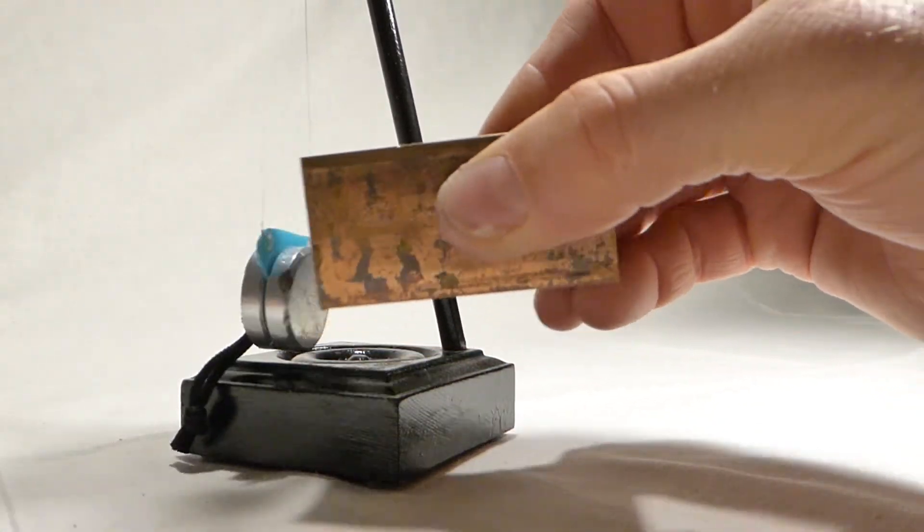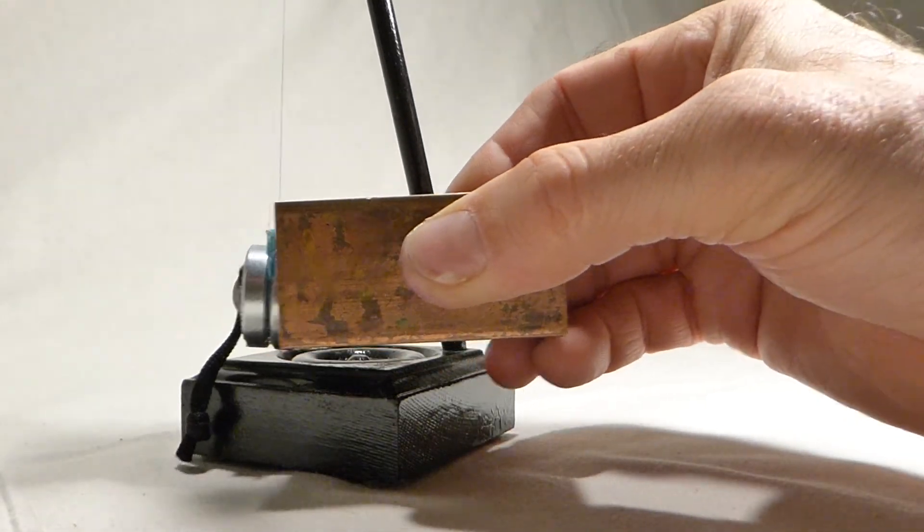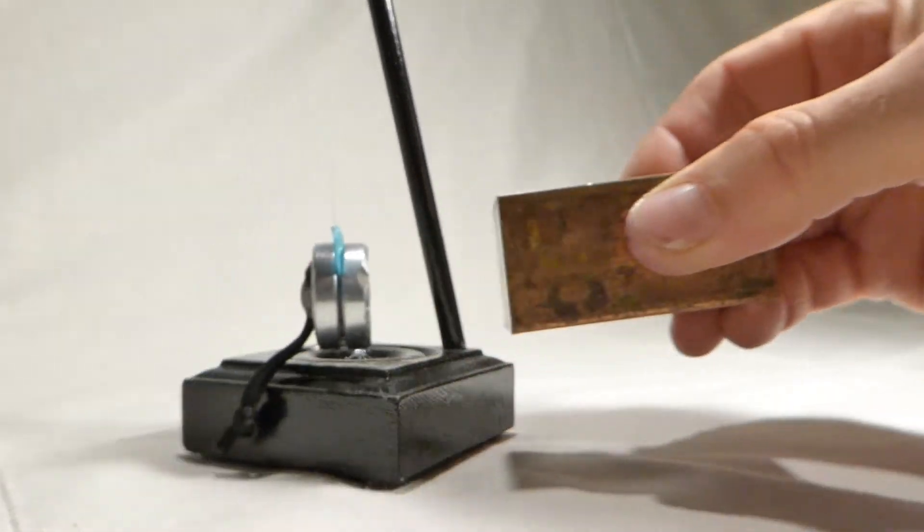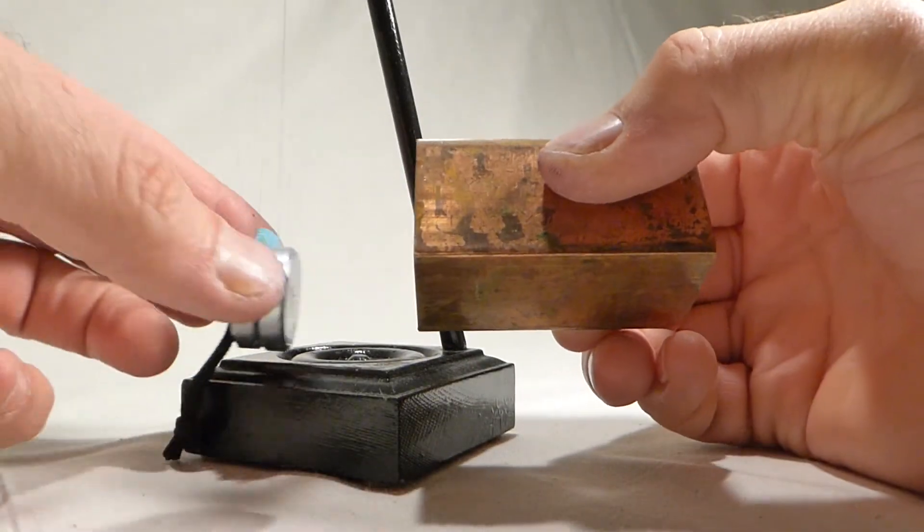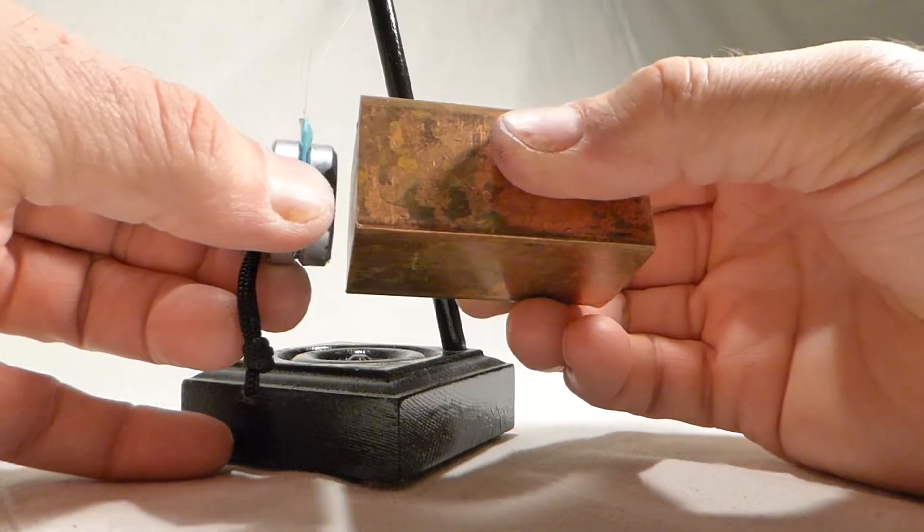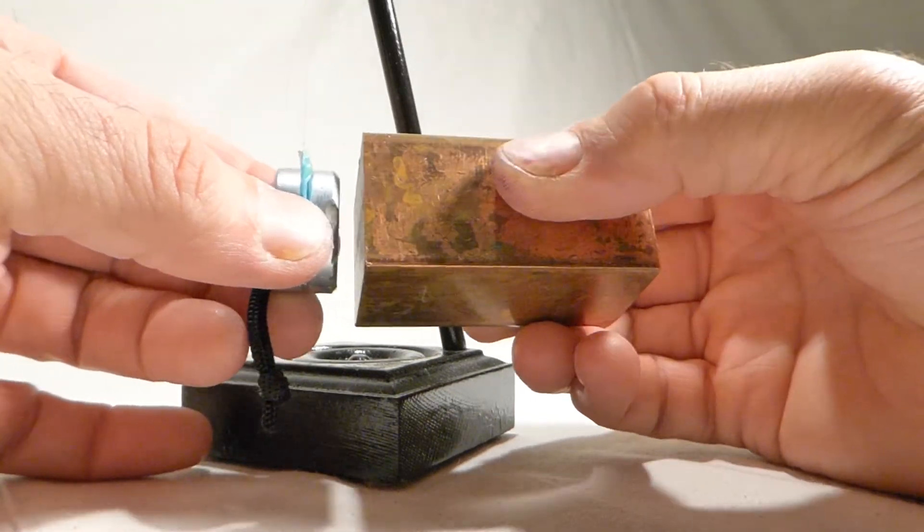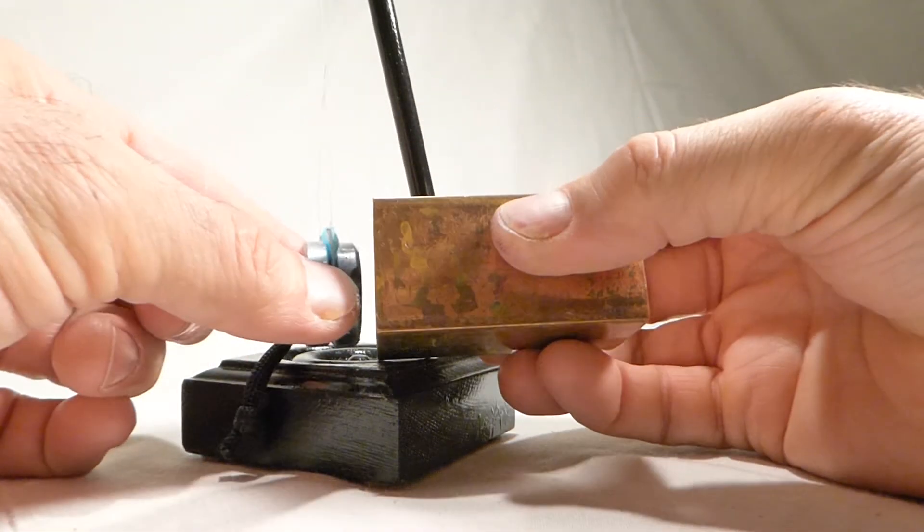But without me hurting your brain talking about electron pools and eddy currents, I can only describe it as chewing gum. When you move the magnet near the copper, it feels like there's chewing gum in between. It's really odd. You can feel the connection only when you're moving them.